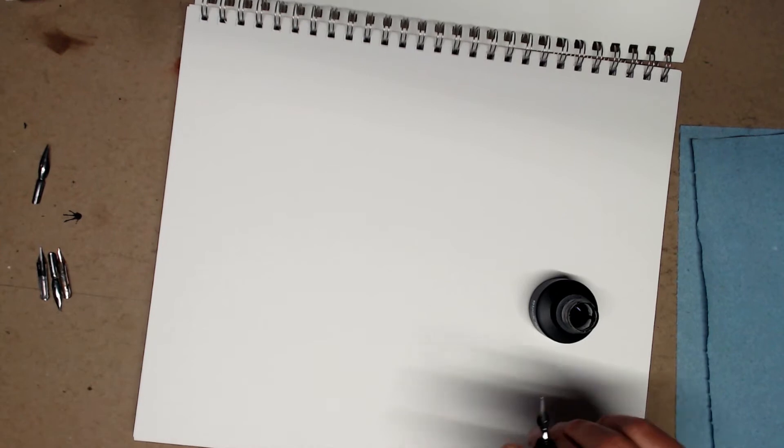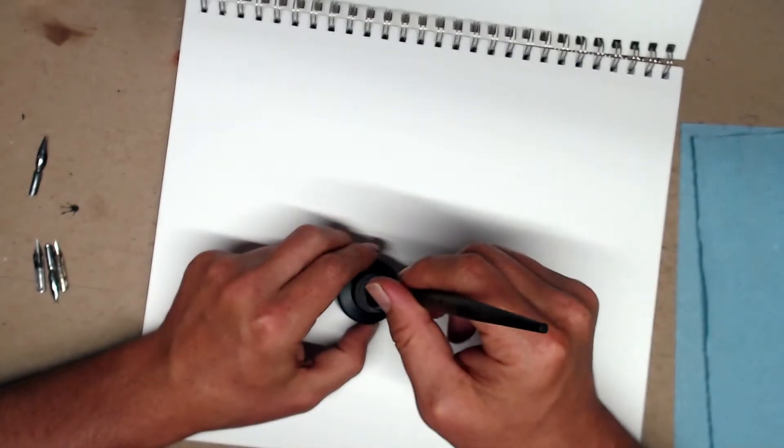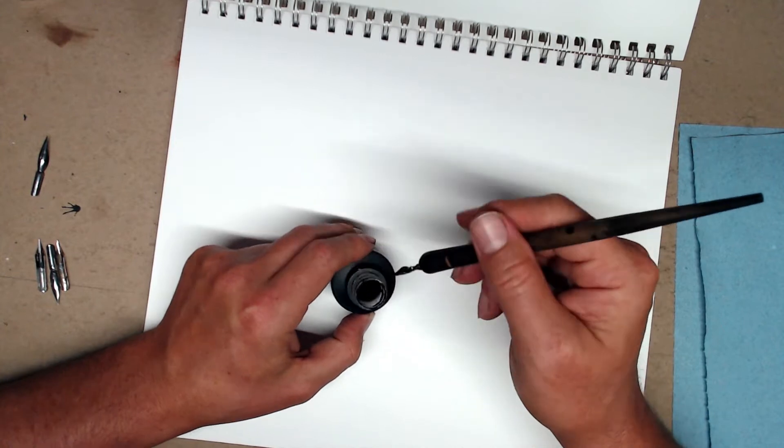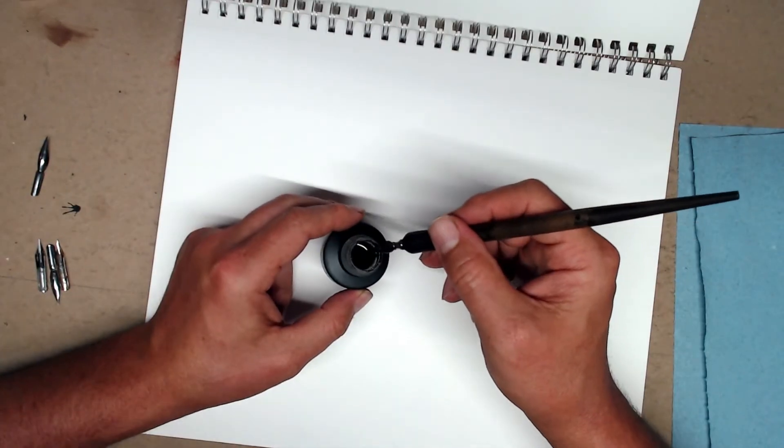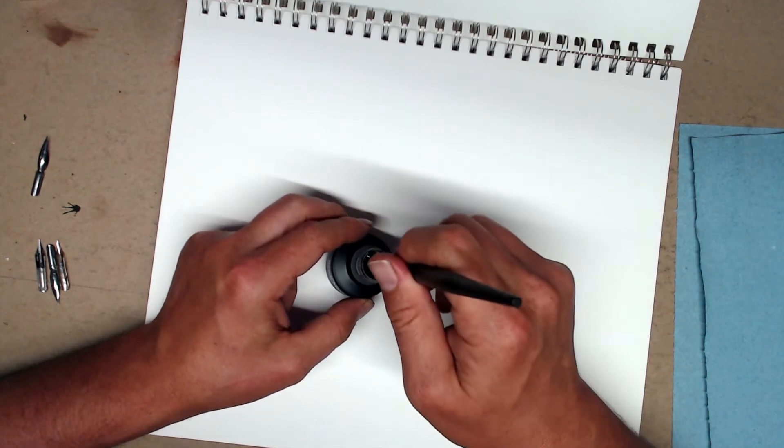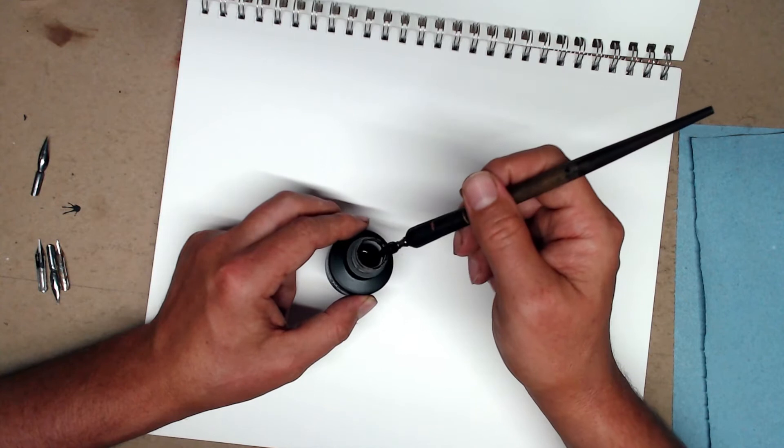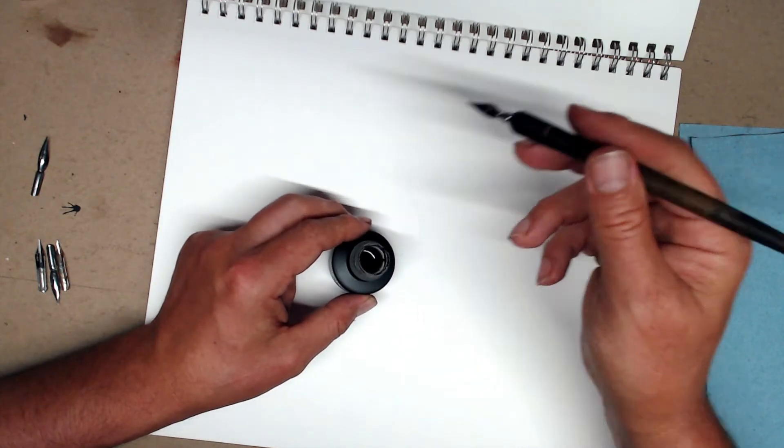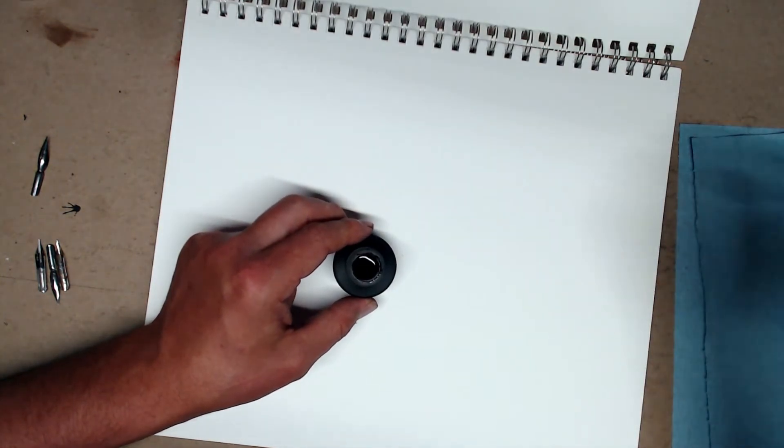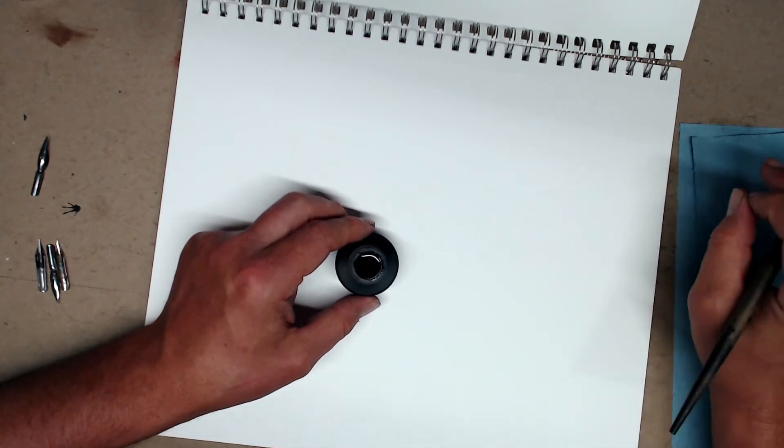If you take care of them and dry them off, don't allow them to rust, you're going to get a lot of life out of them. But again, they're cheap, so it's really no big deal. Okay, so we're dealing with the Hunt Globe 512. Whenever you dip your nib in ink, make sure you're dipping past the reservoir a little bit. And then, you want to give your nib a little shake to shake off any excess ink. This is really important.